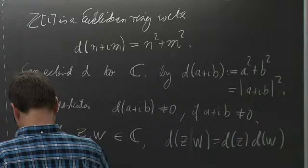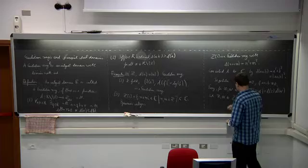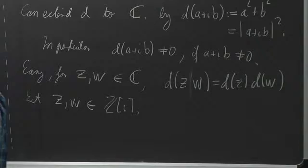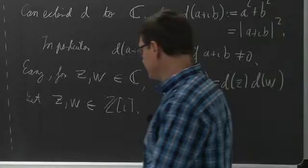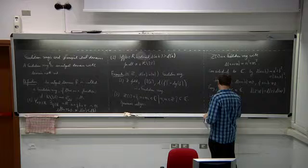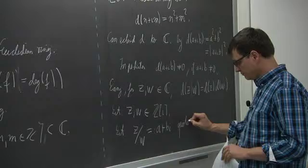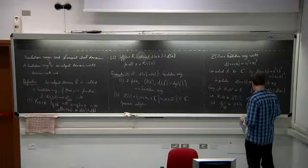To verify division with remainder: take z and w in Z[i]. We want to divide z by w, so we first divide in C. Let z divided by w equal a plus bi be the quotient in C, with w nonzero. We then want to find a quotient in Z[i] lying close enough to this.